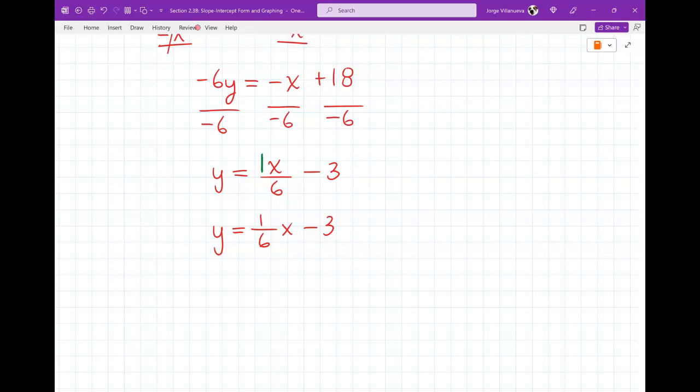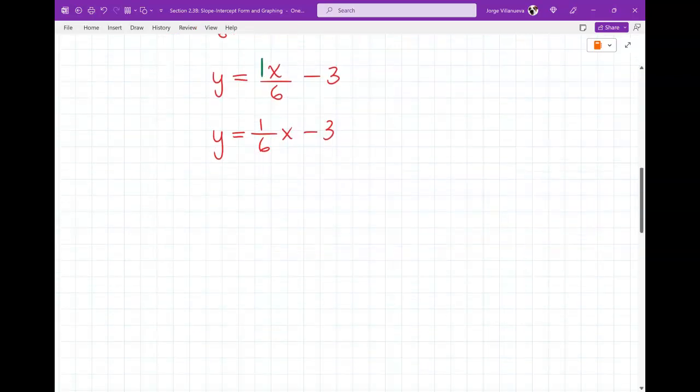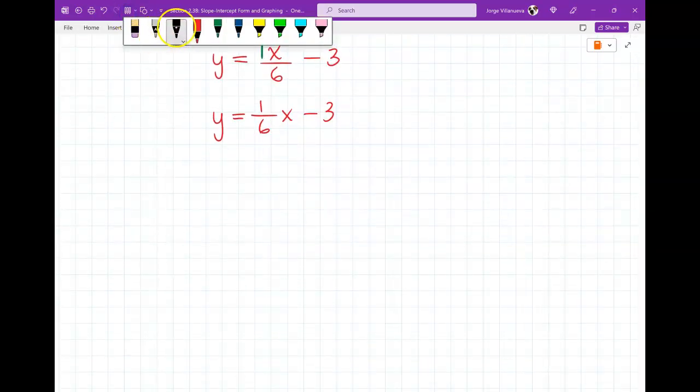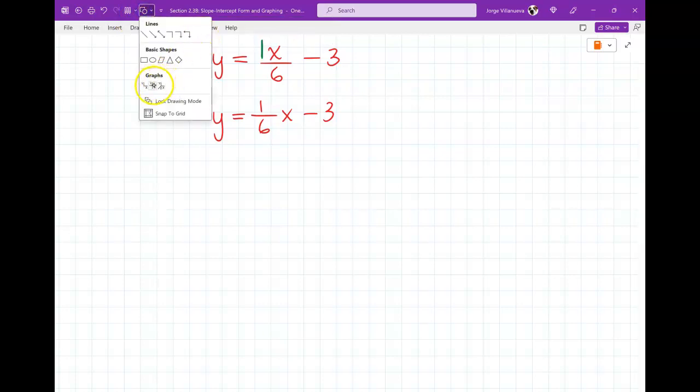In your homework, the first five problems are going to say, write these in slope-intercept form. So that means you're going to be done right there. You will be finished. So you're just going to solve for y, and you're done. But then, after that, there's going to be some questions that say, if you have it in slope-intercept form, can you graph it? So that's what we're going to continue. So let's go ahead and graph this now. I want to graph it.